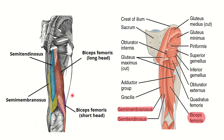These three important muscles are the muscles of the posterior compartment of the thigh. In the second picture also, we can see the semimembranosus, semitendinosus, and biceps femoris muscle.